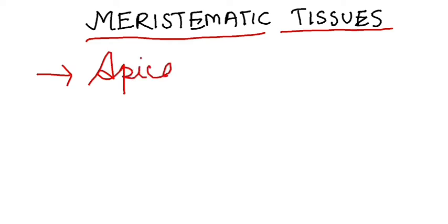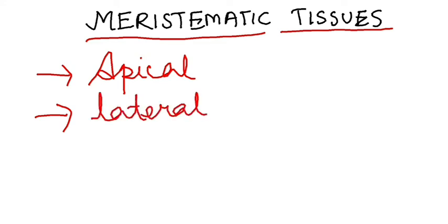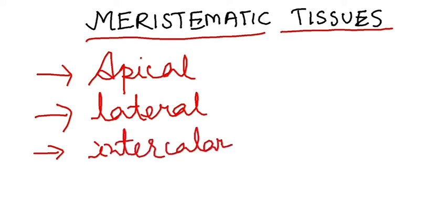The three types are: one, apical meristematic tissues; two, lateral meristematic tissues; and three, intercalary meristematic tissues.